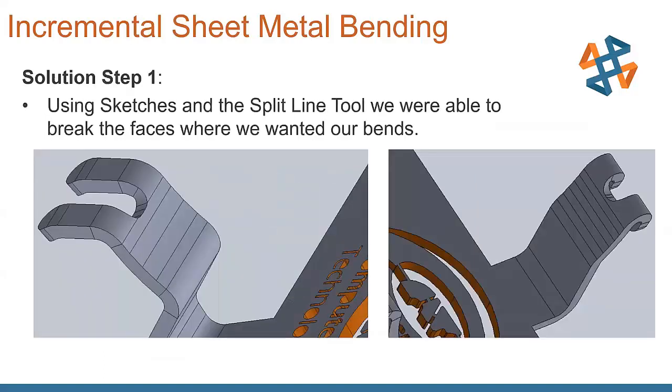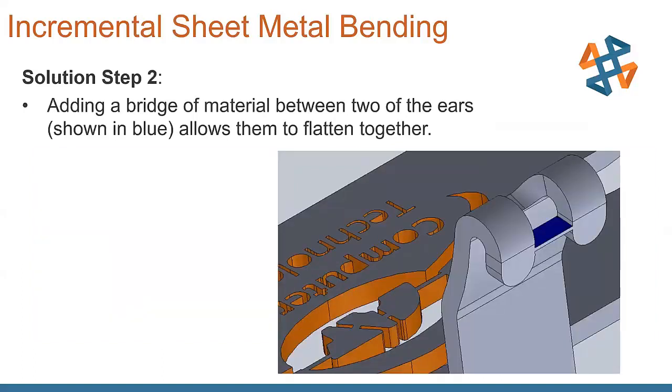What we do, we start off by using sketches in the split line tool, and we are able to break the faces where we want our bends to be. So you can see the image on the left shows what SolidWorks has in there for the bends. The image on the right shows what we want our bends to be, showing those incremental steps as to where we want that part to be formed.